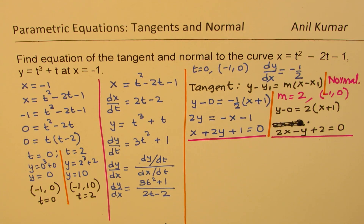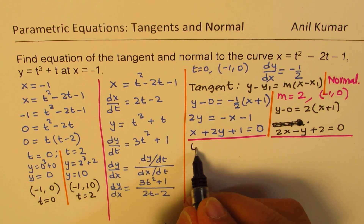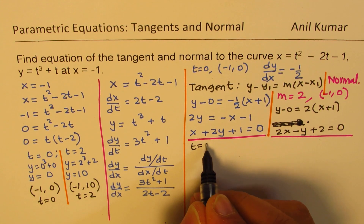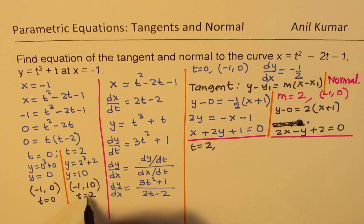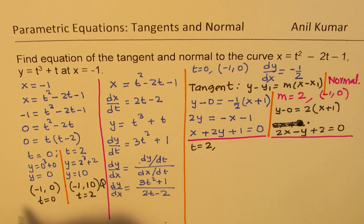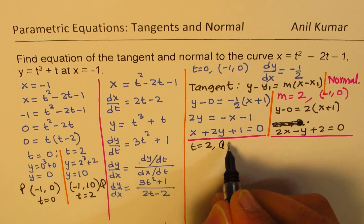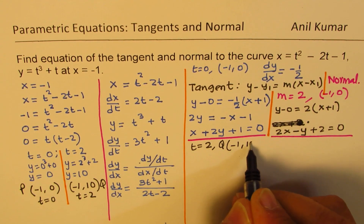I hope you understood the whole process. Now pause the video and find the equation of tangent and normal for the second point, where t equals 2. Let's call this point Q, with coordinates (minus 1, 10).